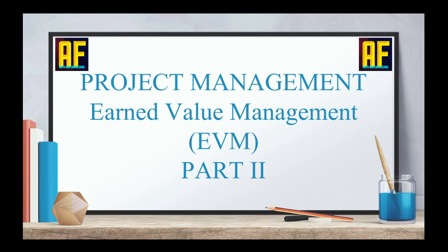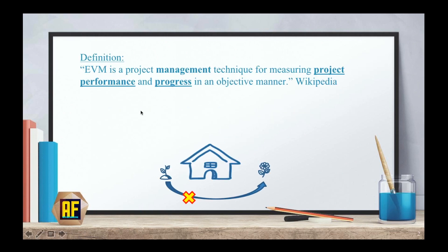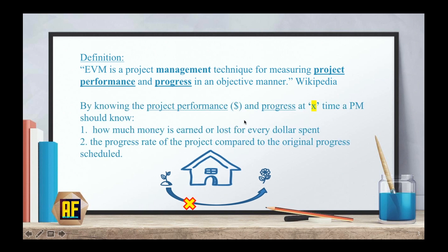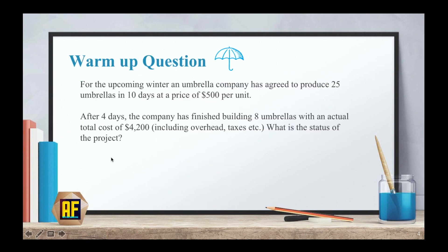Hi everybody, this is Avi from AF Math, and this is our second part on Earned Value Management, which is our second video on Project Management. If you remember, EVM is a project management technique for measuring project performance and progress in an objective manner, according to Wikipedia. By knowing the project performance, the dollar value, and progress at a given time, a project manager should know how much money is earned or lost for every dollar spent, and the progress rate of the project compared to the original progress scheduled.